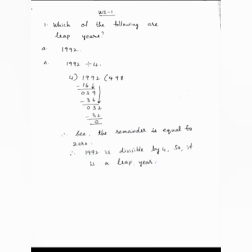Is it clear, children? After dividing any year by 4, if we get remainder 0, then that year is a leap year. Here, 1992 is divisible by 4 because the remainder is 0, so this particular year is a leap year.